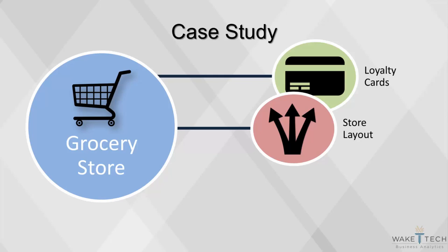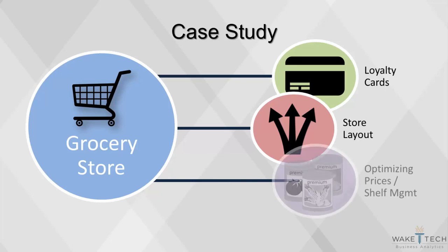Each shelf is also analyzed to find the ideal arrangement. More expensive items are typically placed at or around eye level, while cheaper products will be on the top or bottom shelves. Optimizing prices is another analytical technique used to maximize customer spending. Many grocery stores will have what are called loss leaders — products that are very cheap to draw customers into the store, where they will inevitably spend more on other overpriced items. Grocers will also find the ideal times and prices to mark down expiring products, preventing the product from being thrown away at a complete loss.